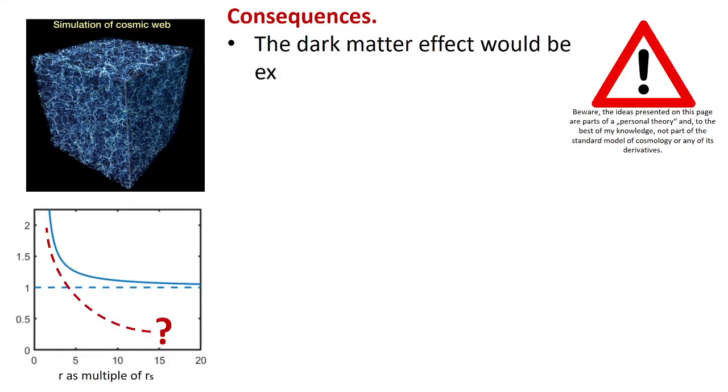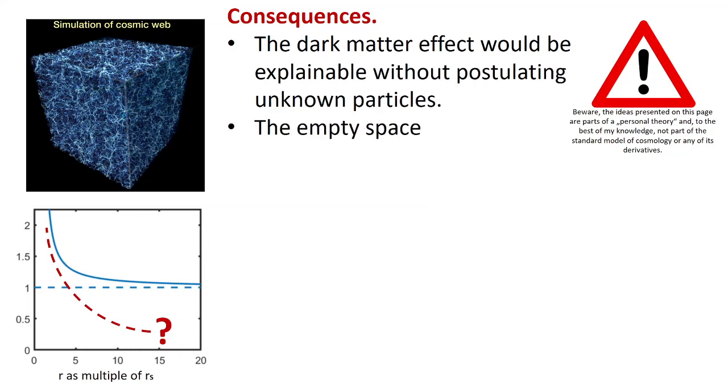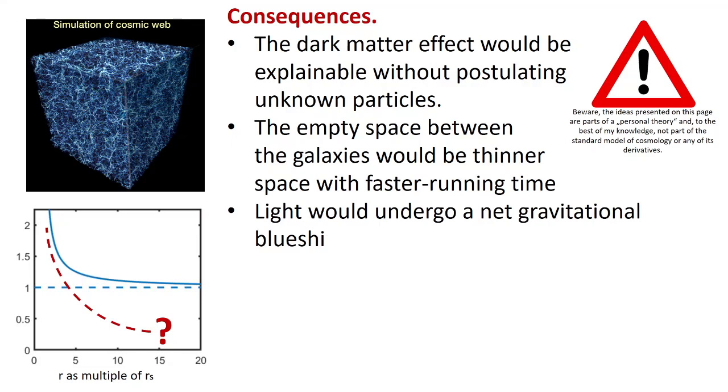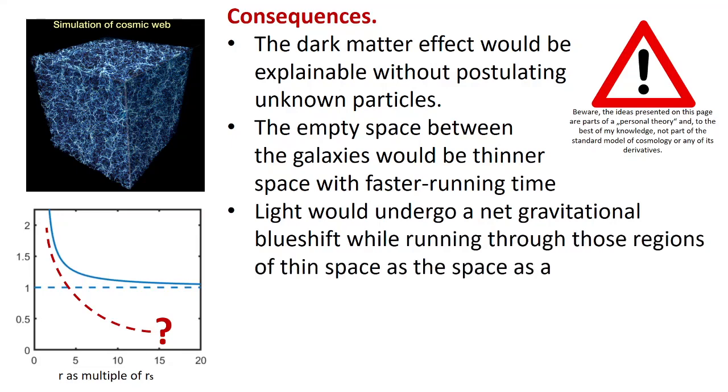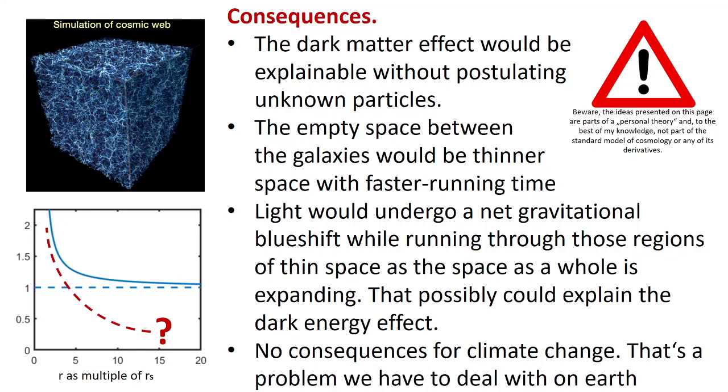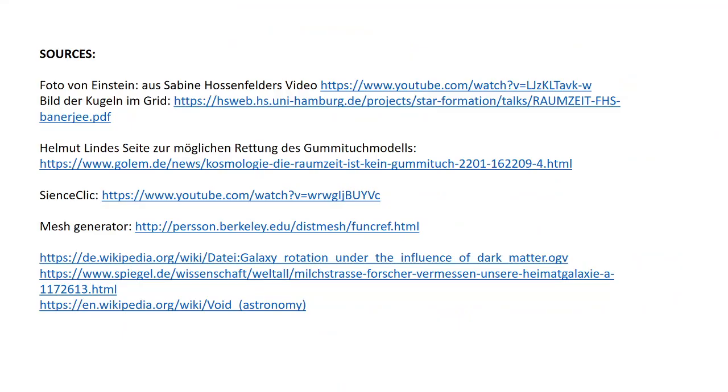Consequences: The dark matter effect would be explainable without postulating unknown particles. The empty space between the galaxies would be thinner space with faster running time. Light would undergo a net gravitational blue shift by running through those regions of thin space as the space as a whole is expanding. That possibly could explain the dark energy effect. No consequences for climate change. That's a problem we have to deal with on Earth. Fast.